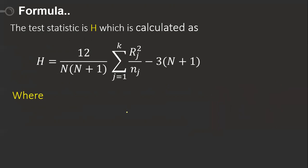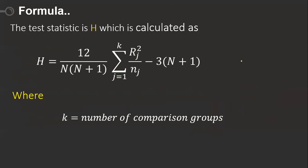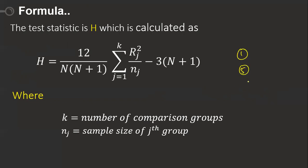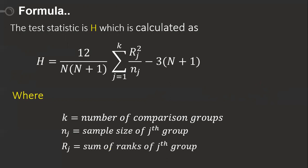Here, k is the number of comparison groups. Suppose we are comparing three groups — group one, group two, group three — then my k value is three. nj is the sample size of the jth group; for example, if group one has five elements, then n1 equals five. rj is the sum of ranks of the jth group; for example, if group one has ranks 1, 2, 5, 7, the sum is 15, so R1 equals 15.